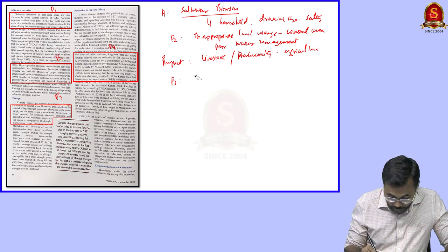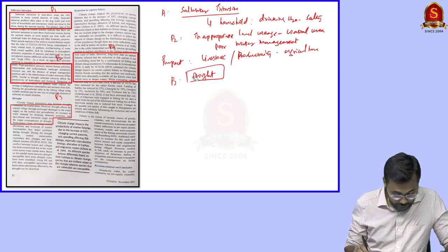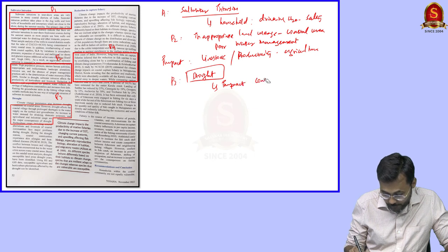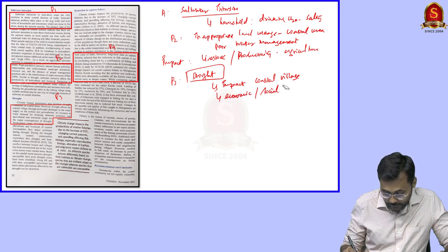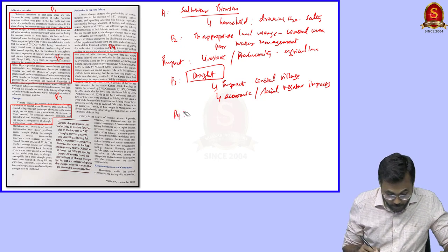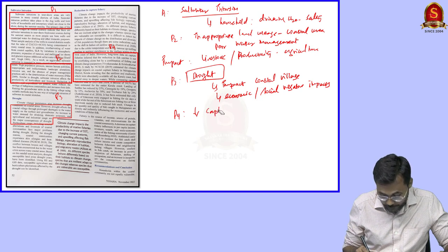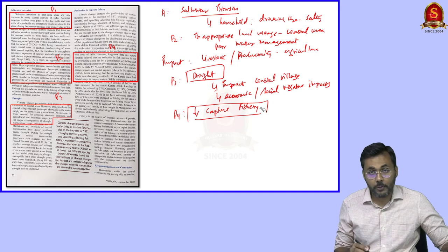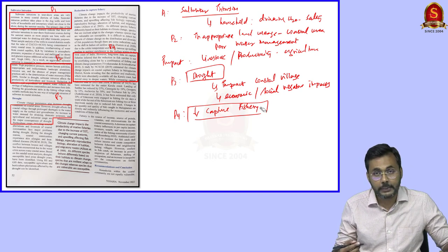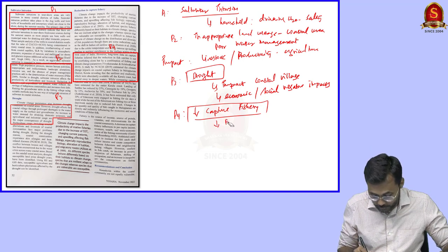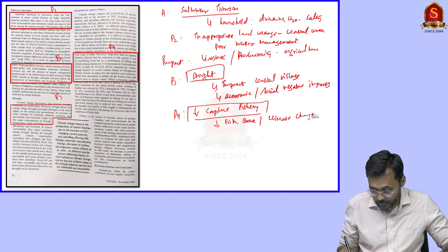Paragraph 3 speaks about drought as another climate change issue in coastal areas, which has economic and social negative impacts on coastal villages. Paragraph 4 speaks about reduction in capture fishery. People believe the reason is reducing fish stock, but the primary reason is climate change. A case study is given from Malappuram district of Kerala, where the catch of sardines and mackerel type fishes has reduced.